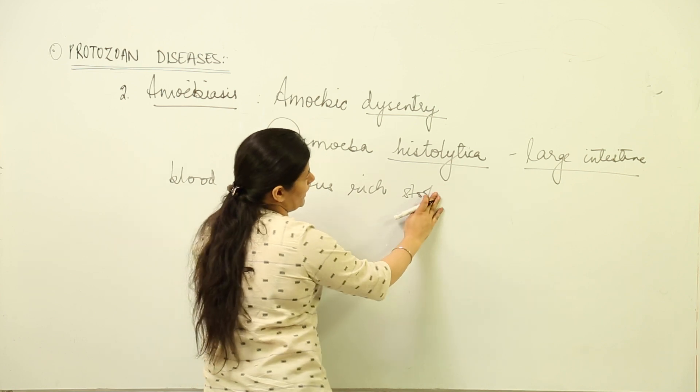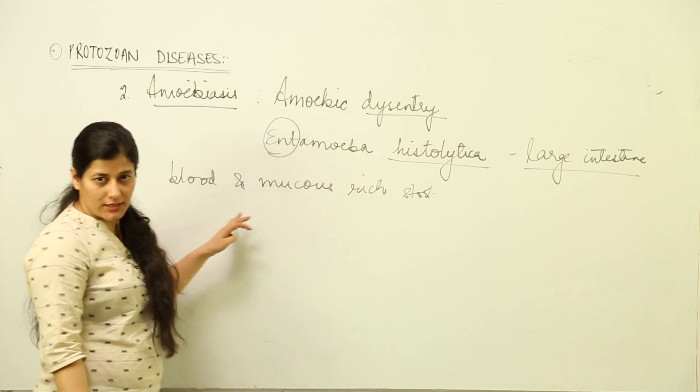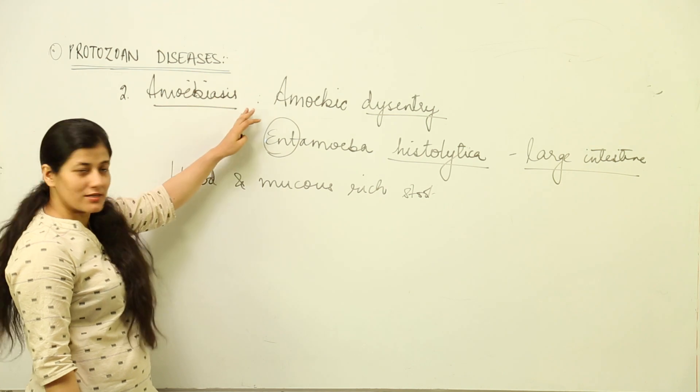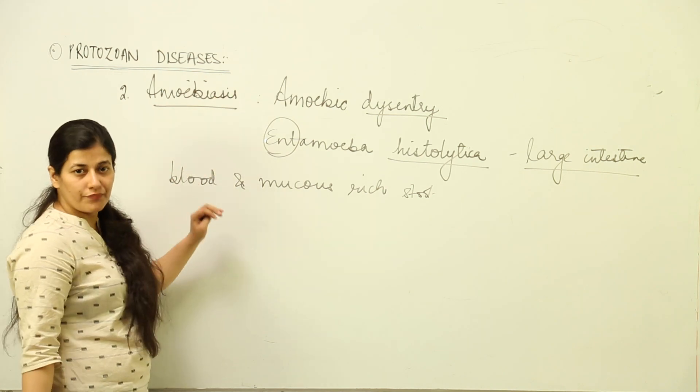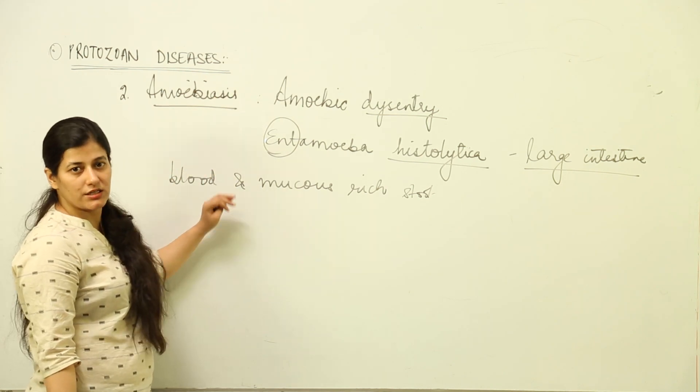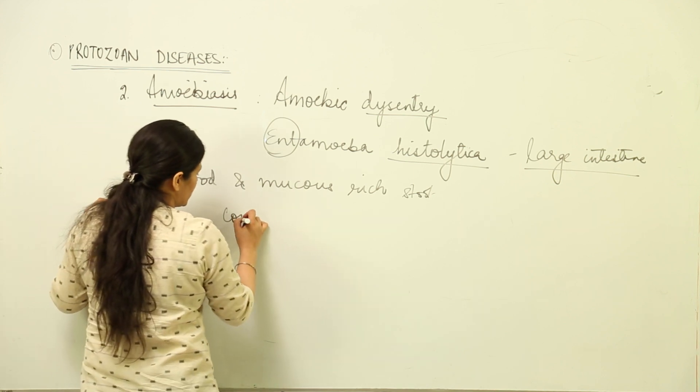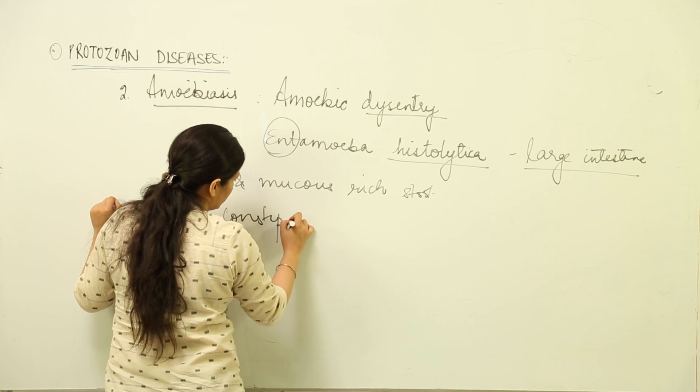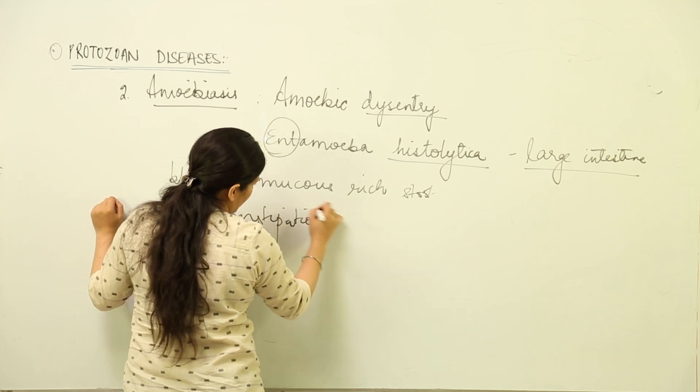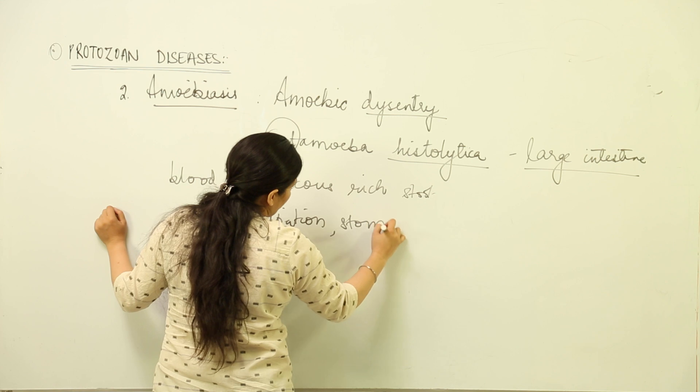That should make you question your health and go to a doctor to get an antibiotic so that this amoebiasis can be controlled. It infects your large intestine, causing conditions like constipation, blood and mucus-rich stool, and stomach ache.